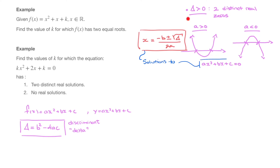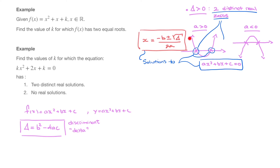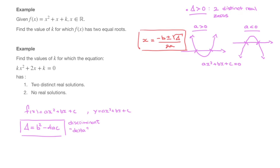When delta is positive, the solutions to this equation are given by the formula x equals negative b plus or minus the square root of delta, all over 2a. So that's the first possibility: if the discriminant delta is positive, then the function has two distinct real zeros, the parabola crosses the x-axis in two points, and we find those x-values with this formula.